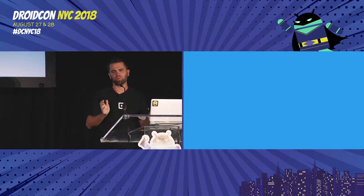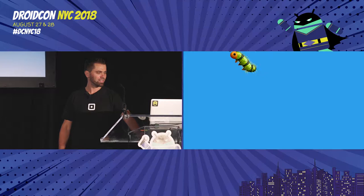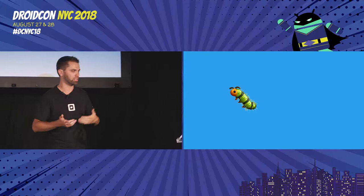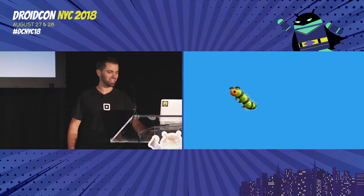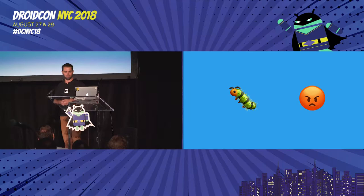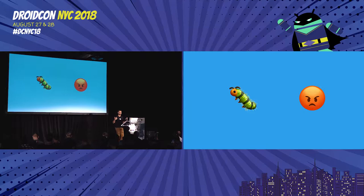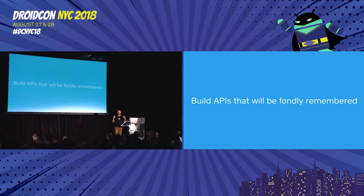What happens when you build a bad API? First, someone is going to try to use your API and they're going to have bugs in their code. They're going to use it incorrectly — and it's your fault. Your API is bad. The developers are going to be angry and frustrated, and they'll associate your company with negative emotions. The spirit should really be: build APIs that people will remember fondly.